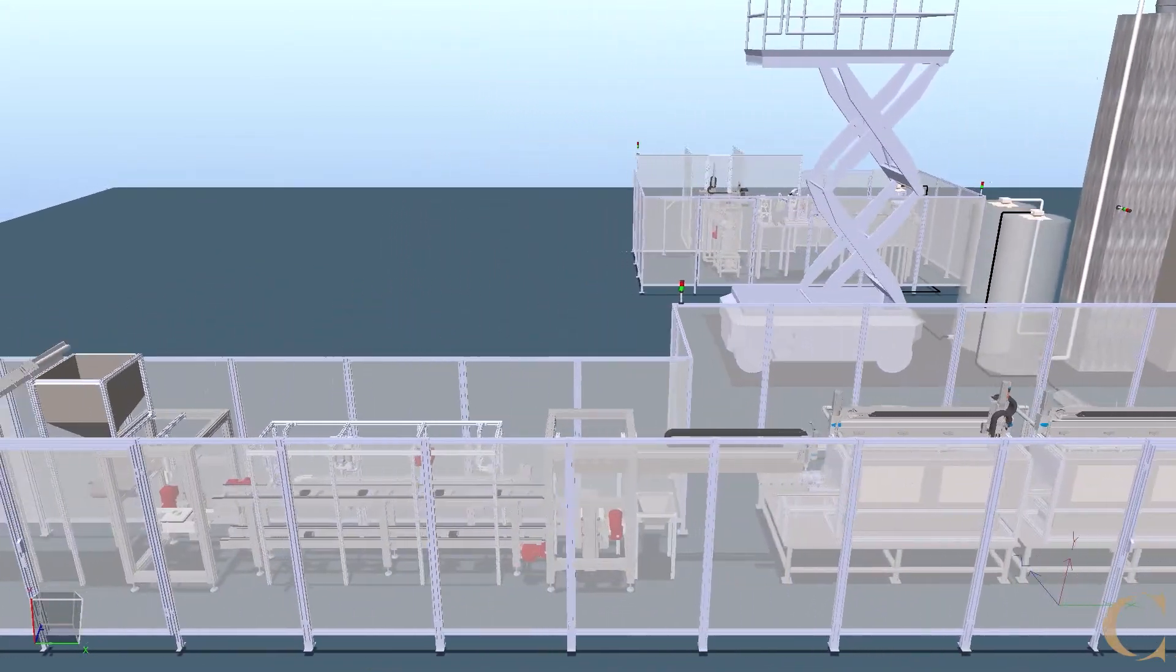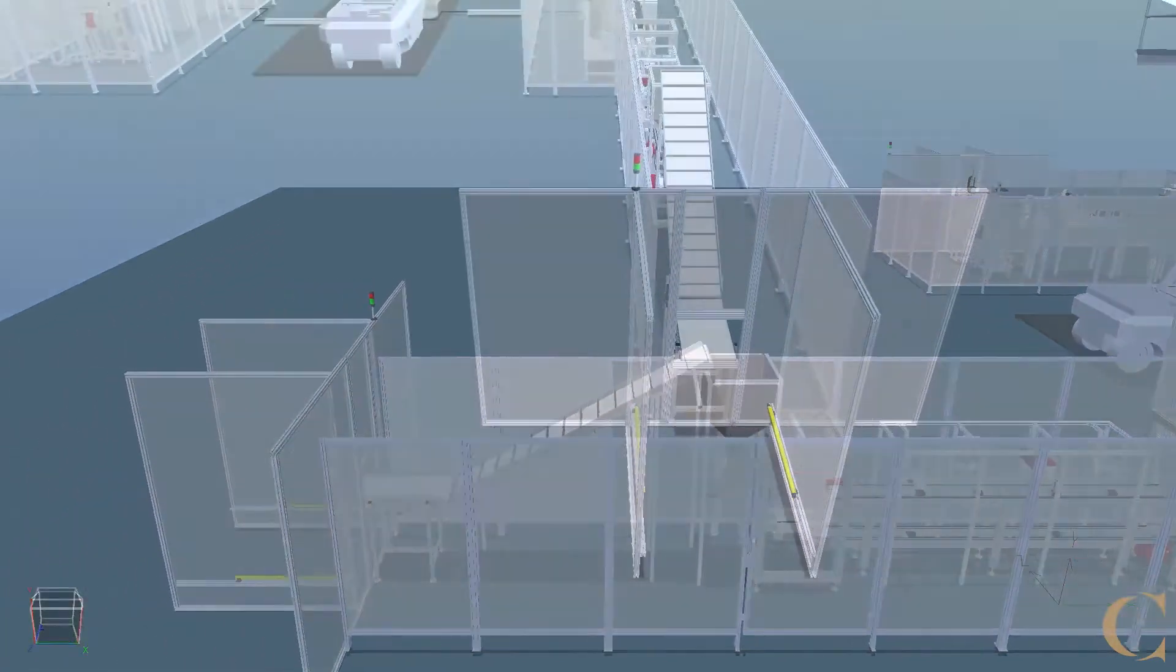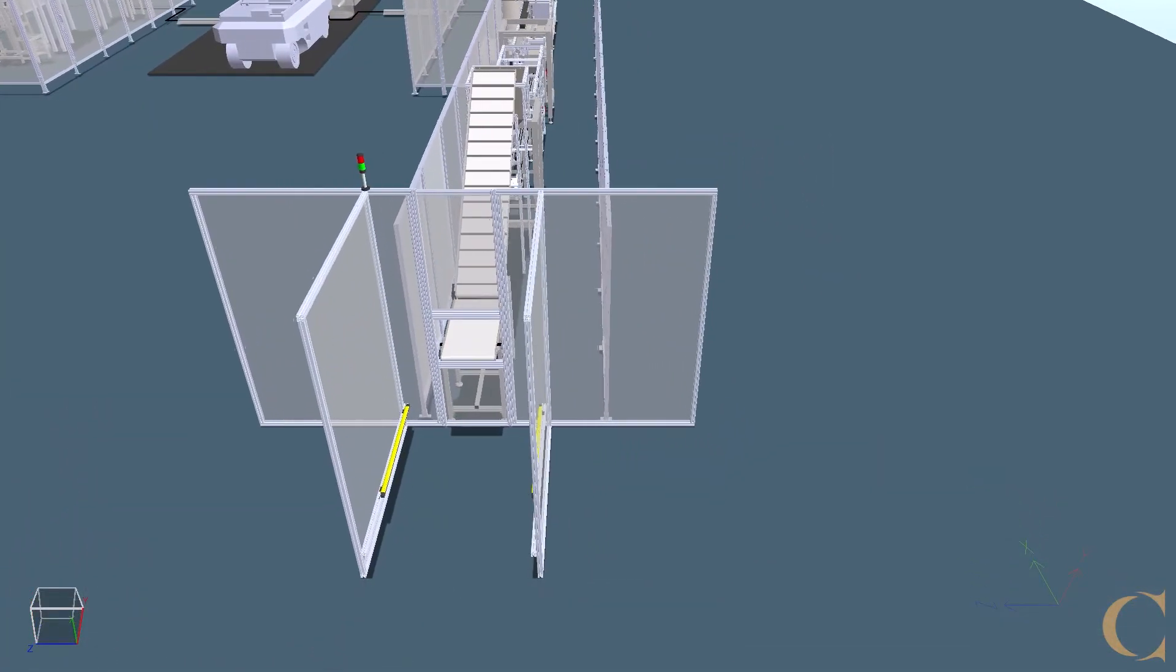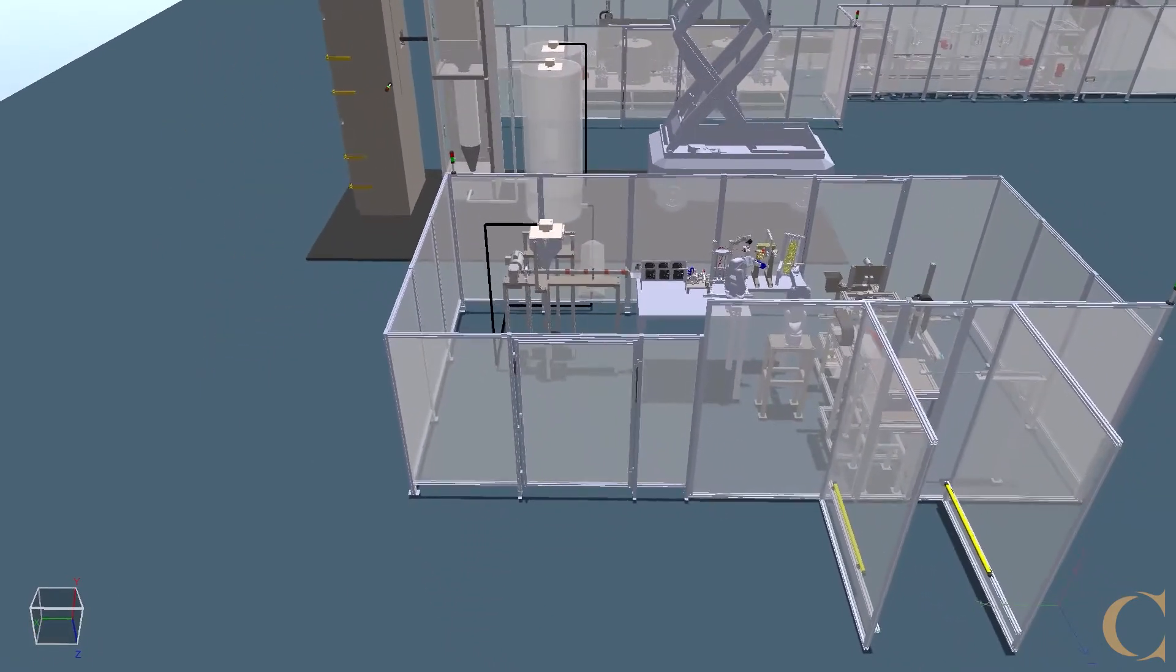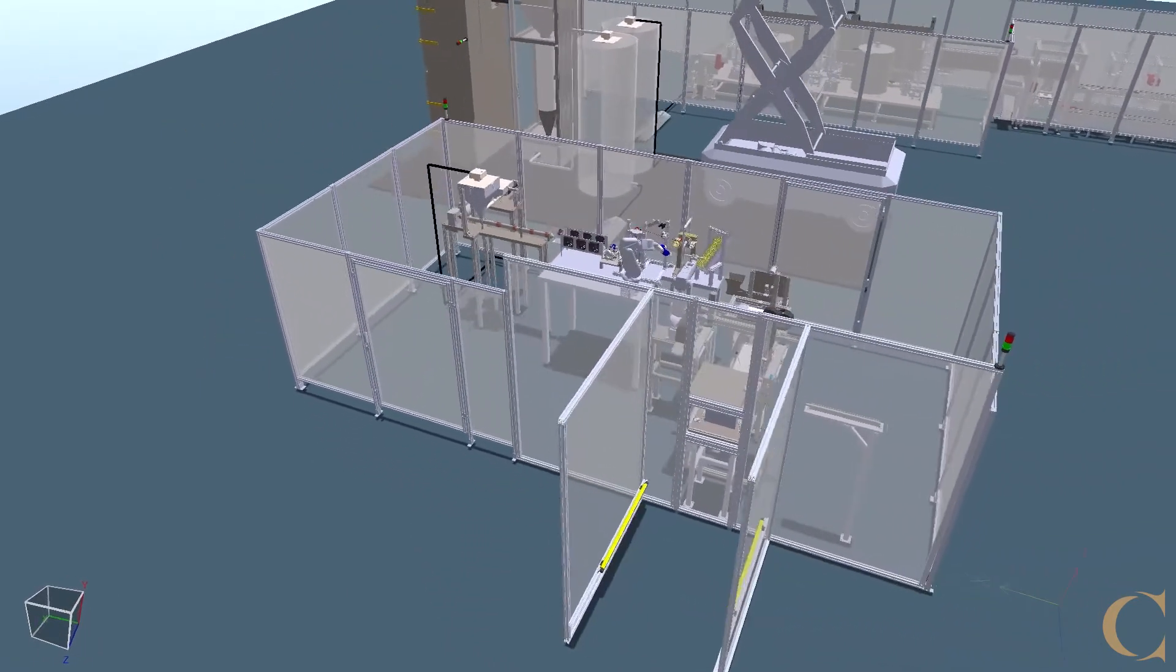In areas where an operator will need to come in close proximity to the cell while it is operating, we have light curtains to ensure that the operator can only access that part of the cell when it is safe to do so.